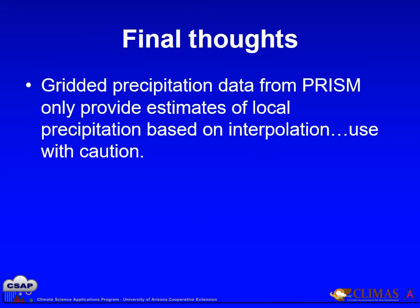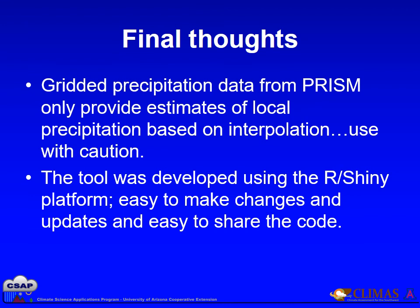Just a reminder that the gridded precipitation data from PRISM only provides estimates of local precipitation based on interpolation. Use with caution and interpret the data carefully. This tool was developed using the R programming language and Shiny platform, which makes it easy to make changes and updates and easy to share the code. Please let me know if you have suggestions for the tool or would like the code for your own analysis.